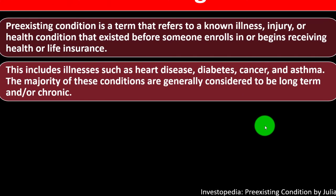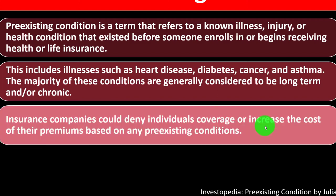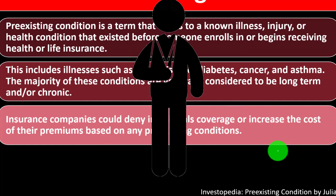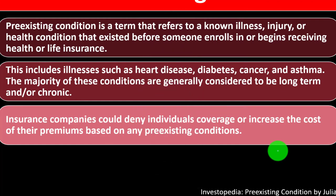Pre-existing conditions include illnesses such as heart disease, diabetes, cancer, and asthma. If an insurance company sees those, they're going to say that increases the risk because typically problems tend to compound or build on prior problems. The majority of these conditions are generally considered to be long-term and/or chronic in nature. Obviously, if you're talking about a broken arm, once the arm is fixed, that's hopefully not a long-term problem — whereas these other conditions could be, and that means they could compound with other problems.